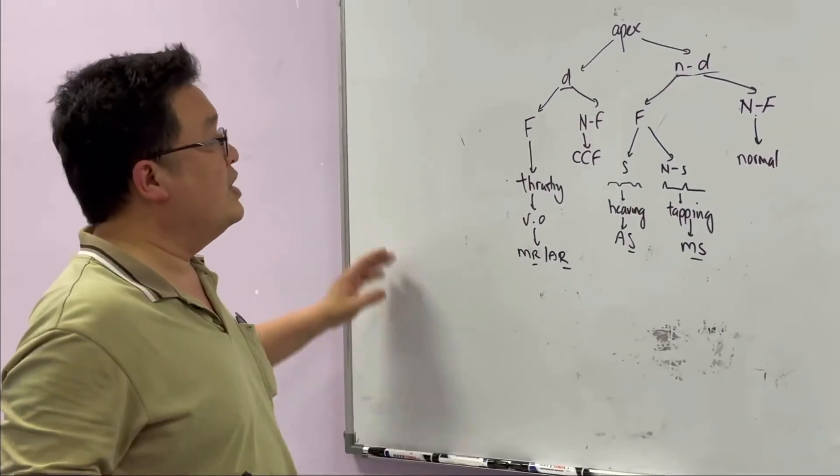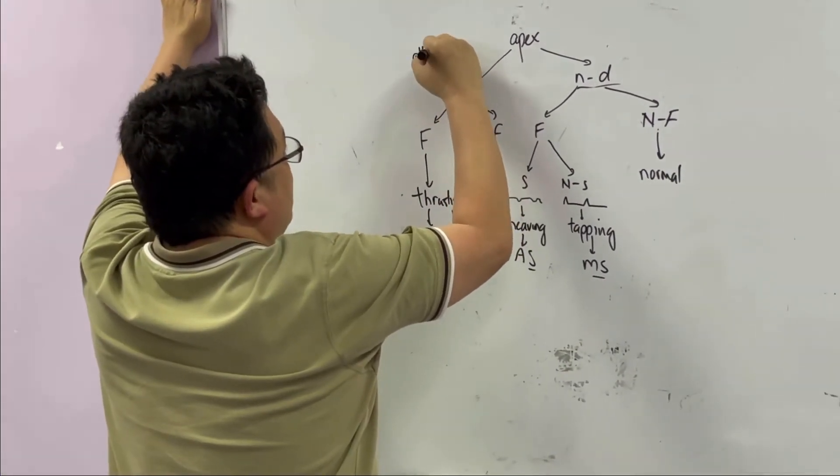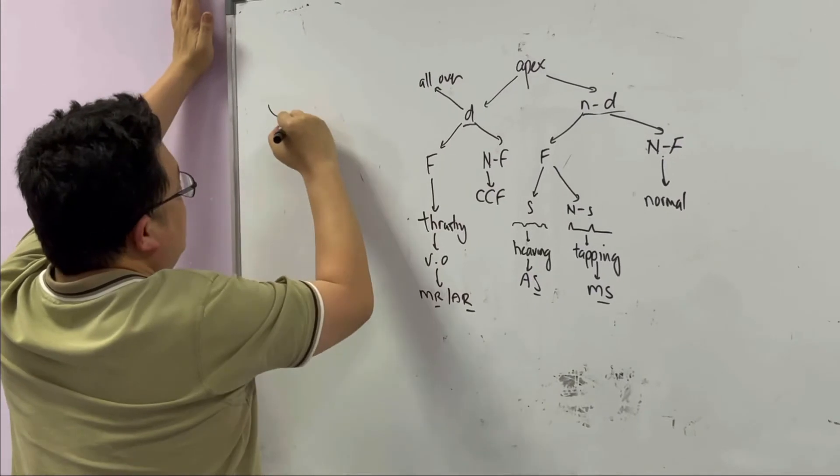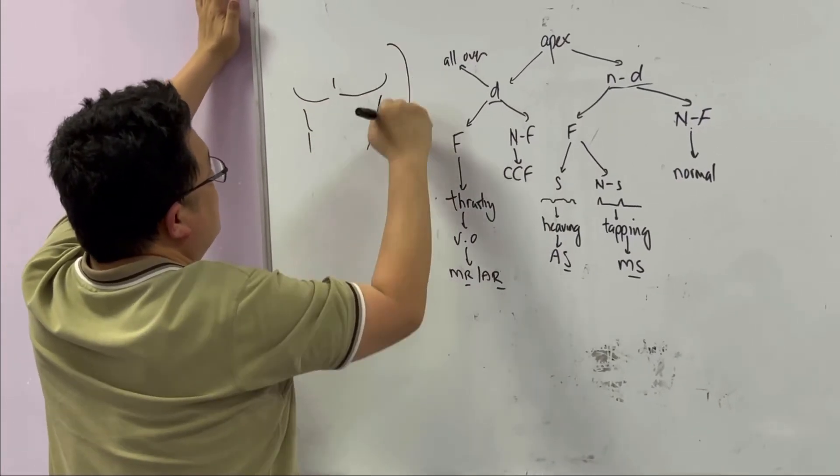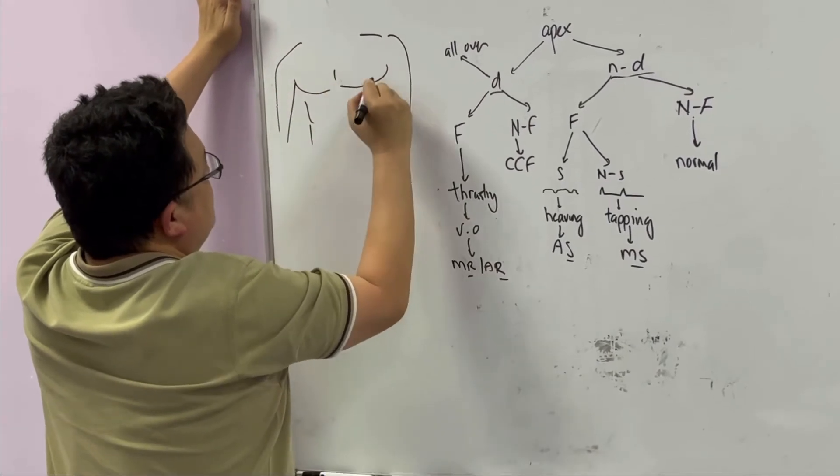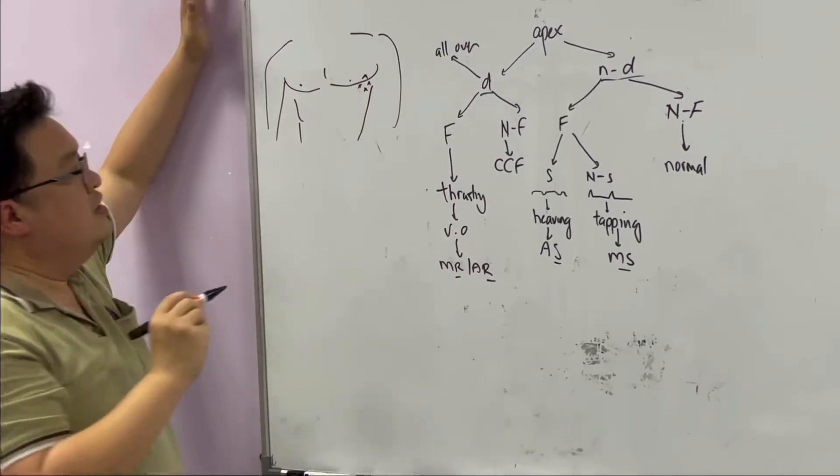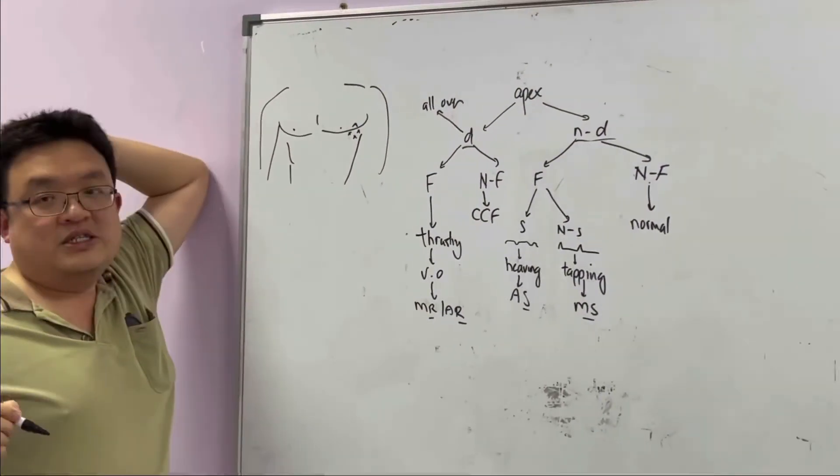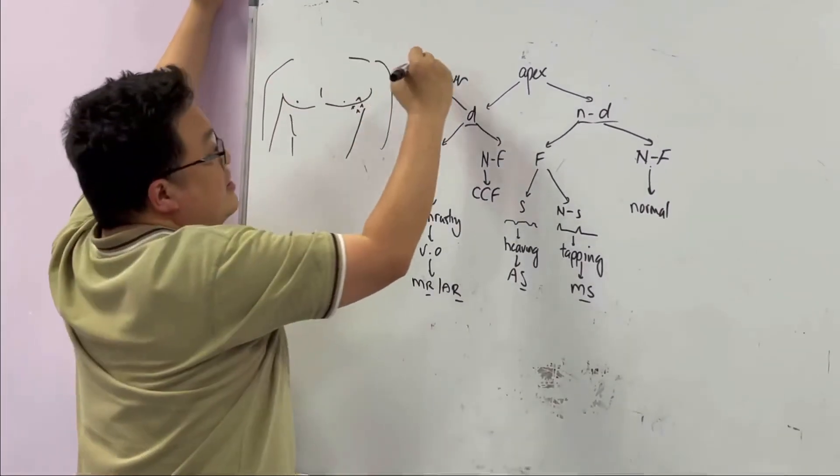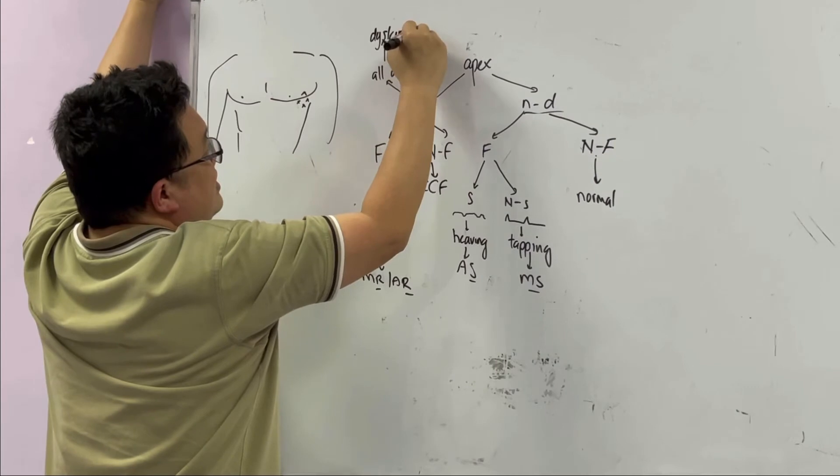What if the apex is all over? So you have your apex here, here, here. The apex is all over, very hard to localize. What does this mean? This is known as the dyskinetic apex.